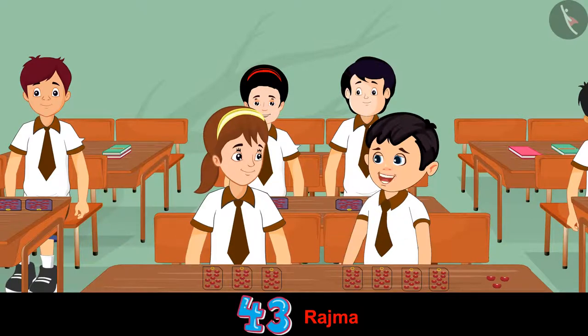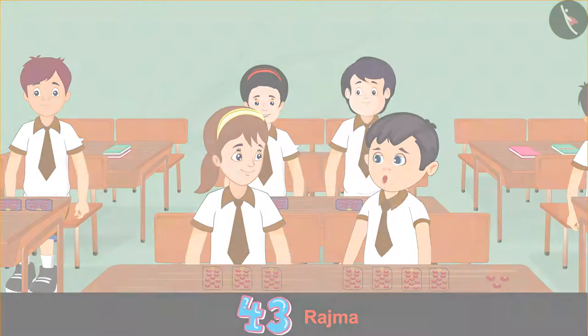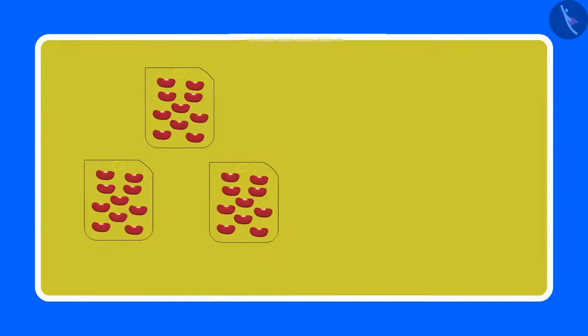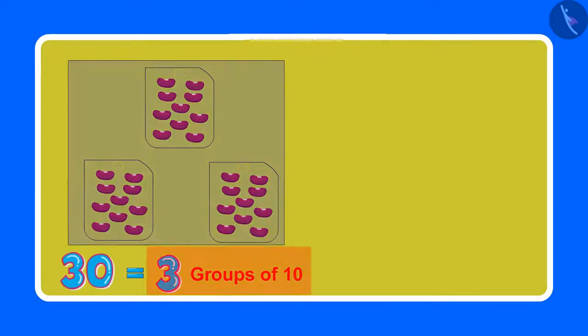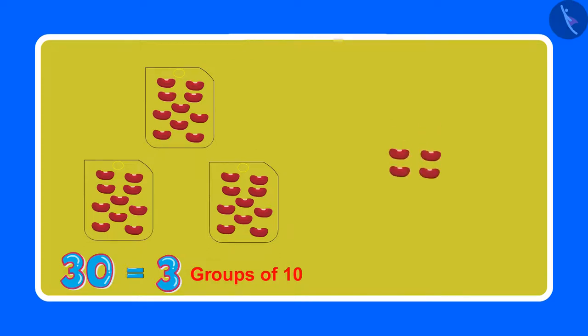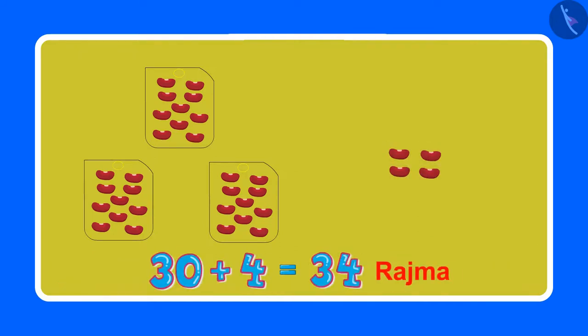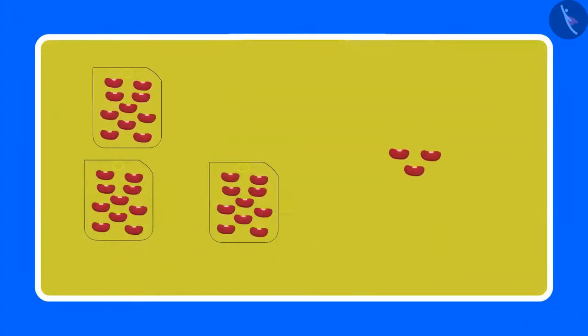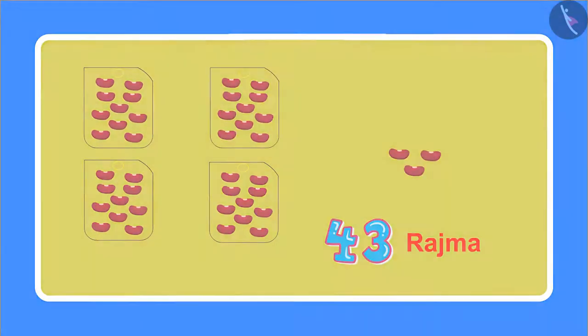No, Aarti. You are not counting it correctly. One packet has 10 beans of rajma, and you have made 3 packets like these. So that makes it 30 rajma beans, which means 3 sets of 10 each. And along with this, 4 beans, which means 4 single units. So in total, there will be 34 rajma beans. But we want 43 rajma beans.